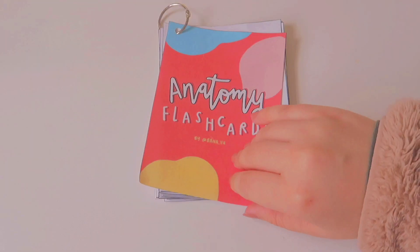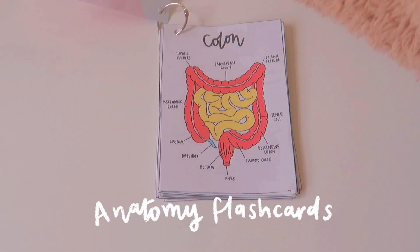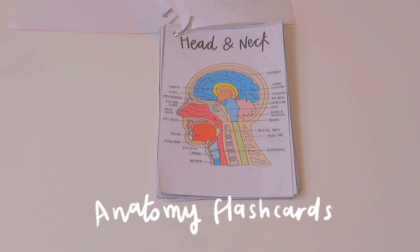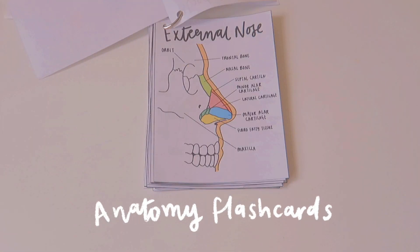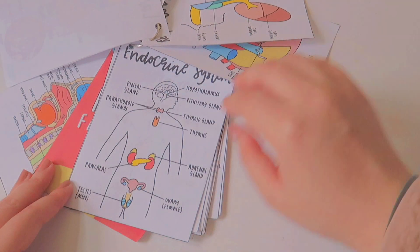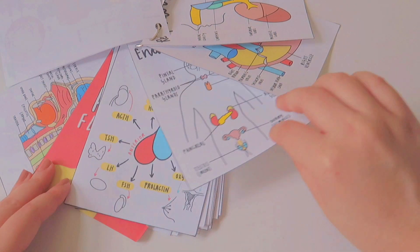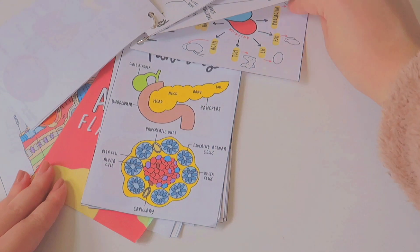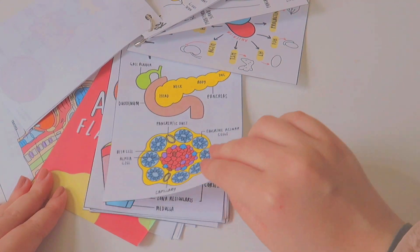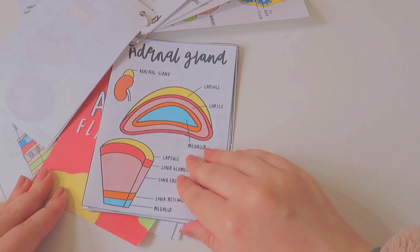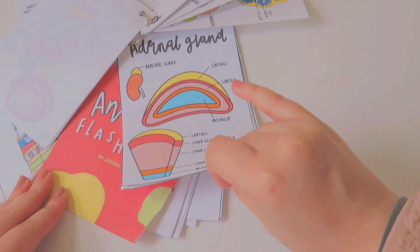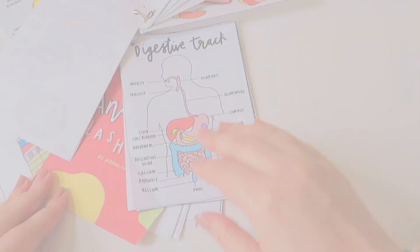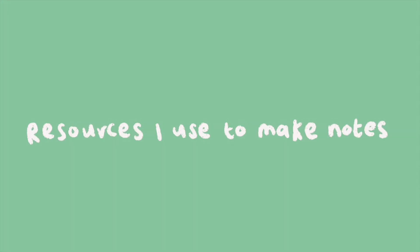I have also created anatomy flashcards using my iPad and an app called Procreate. I've simplified the diagrams to make it easier to visualise different organs and body systems. These flashcards are available to purchase on my Etsy, so if you're interested and would like to support me, I'll leave the link below in the description box.